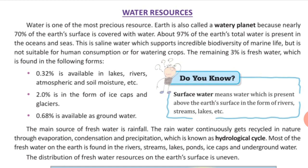There is so much water on the earth, but we usually hear people saying that there is a shortage of water. Why do people say that? Because about 97% of water on the earth is saline water, present in oceans and seas. This salty water is not suitable for human consumption or for watering crops. Only 3% is fresh water, and this 3% fresh water is fit for consumption.